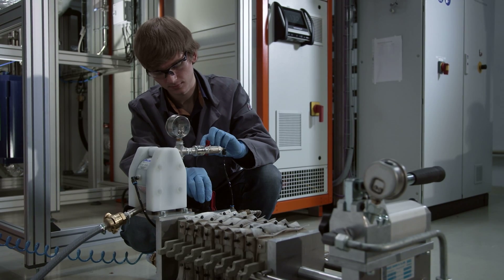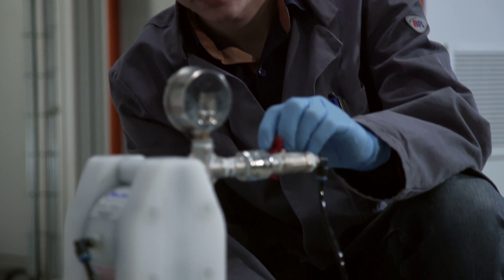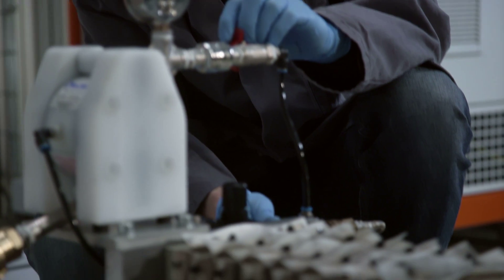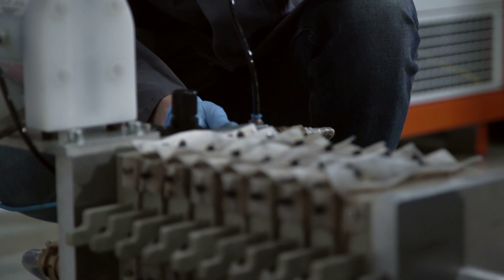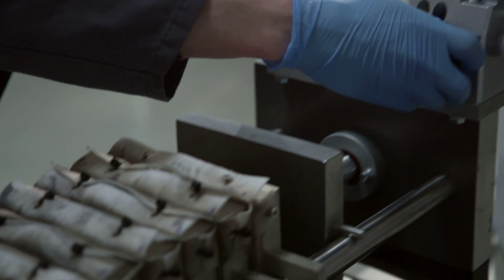After the reaction, engineers allow the contents of the reactor to flow through a special filter, consisting of many chambers. Cobalt, nickel, and manganese remain in the filter as a black residue.